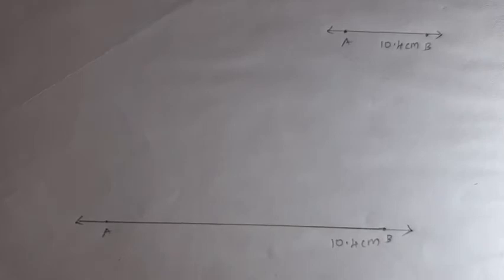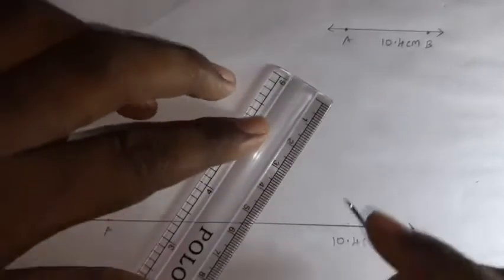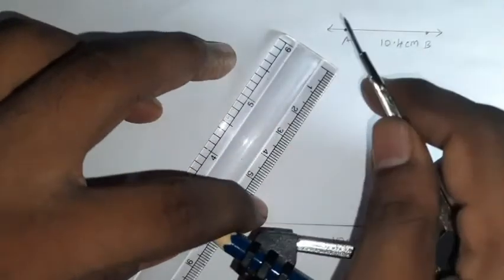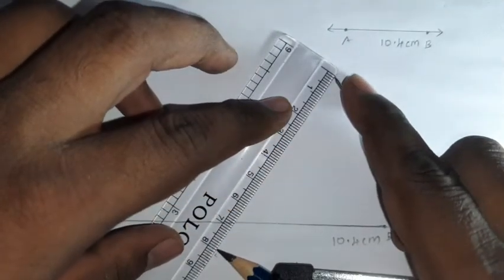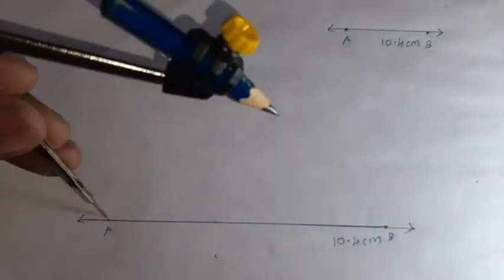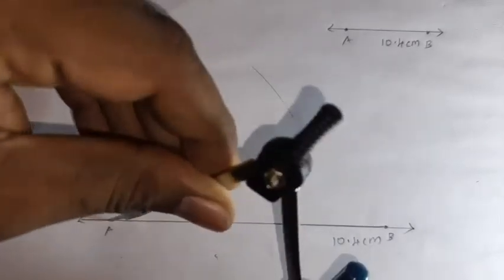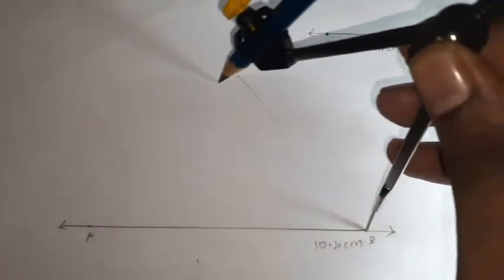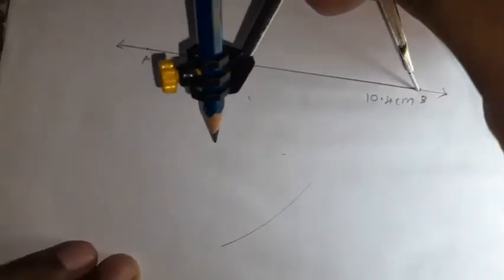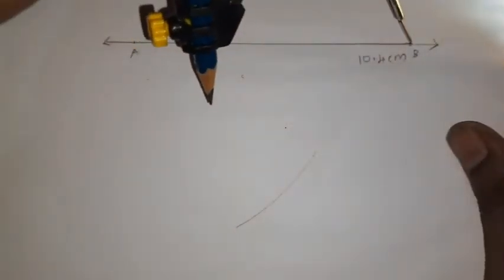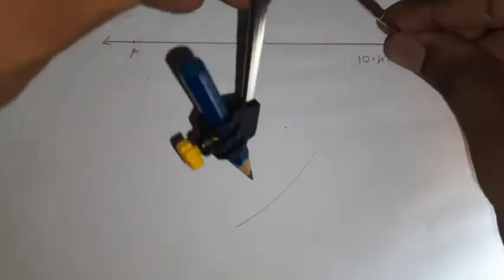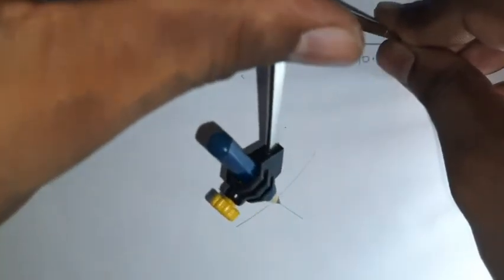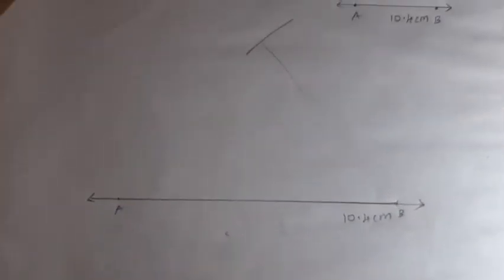Perpendicular symbol. The measurement, the center point. 5.8 divided by 2 is 2.9. So 2.9 centimeters. Next step is D. 10.4 centimeters. Rough diagram. I'm marking point A, point B. 10.4 centimeters. AB equals 10.4 centimeters.